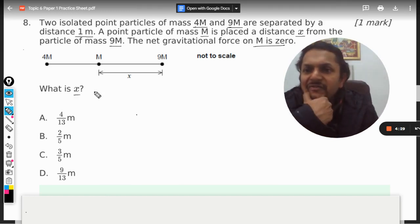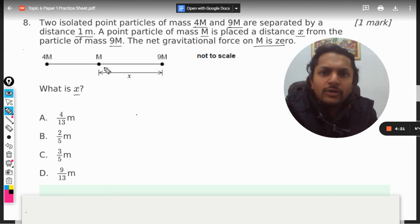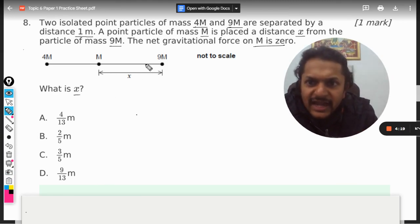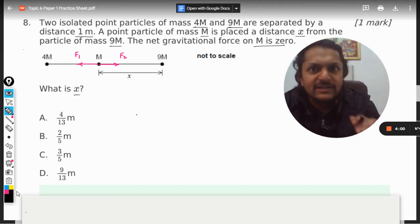So what we want to do here is we have to find the gravitational force. Masses always attract each other, so this 9m is going to attract this mass and this 4m is going to attract this mass towards itself. I can call this as F1 and this as F2. According to the question, the net force on m is equal to zero, which only means that F1 is equal to F2.